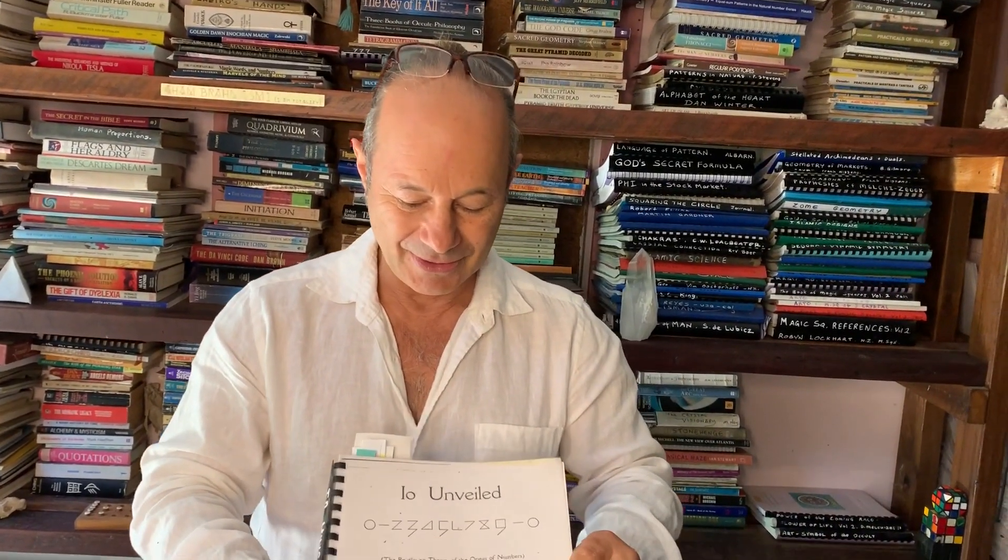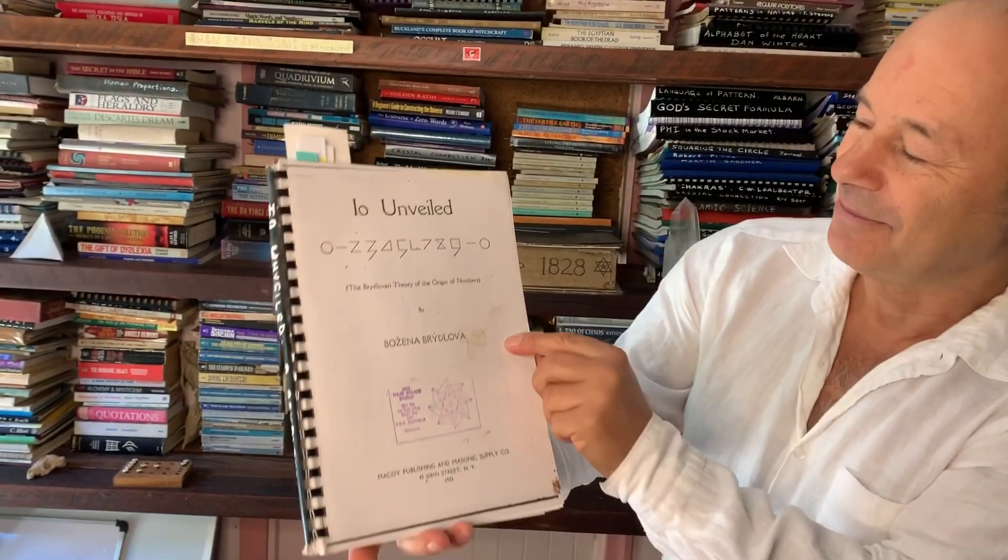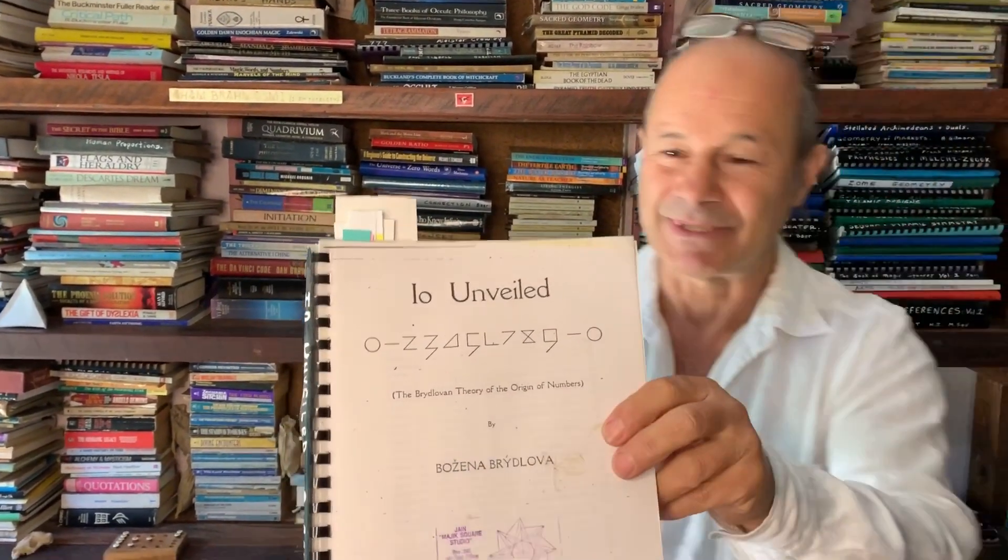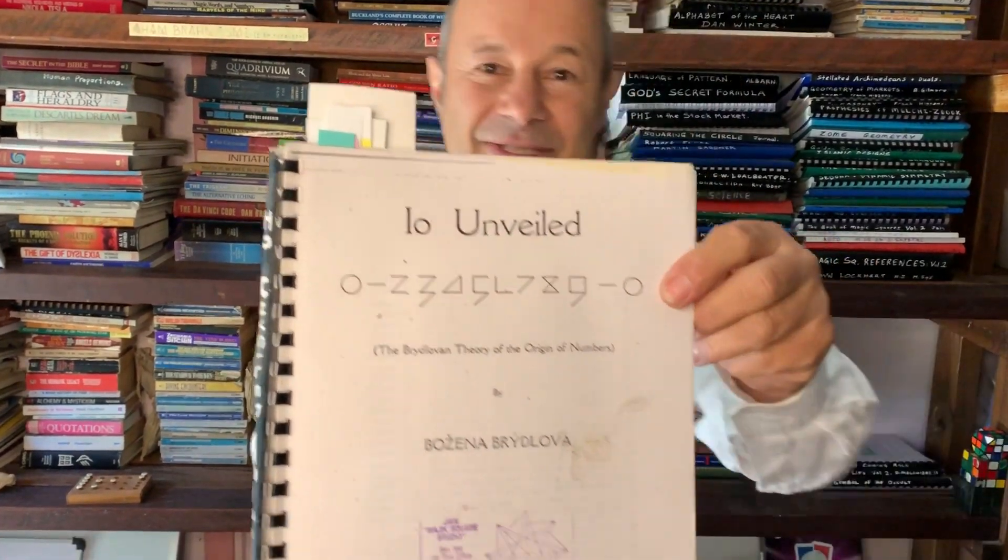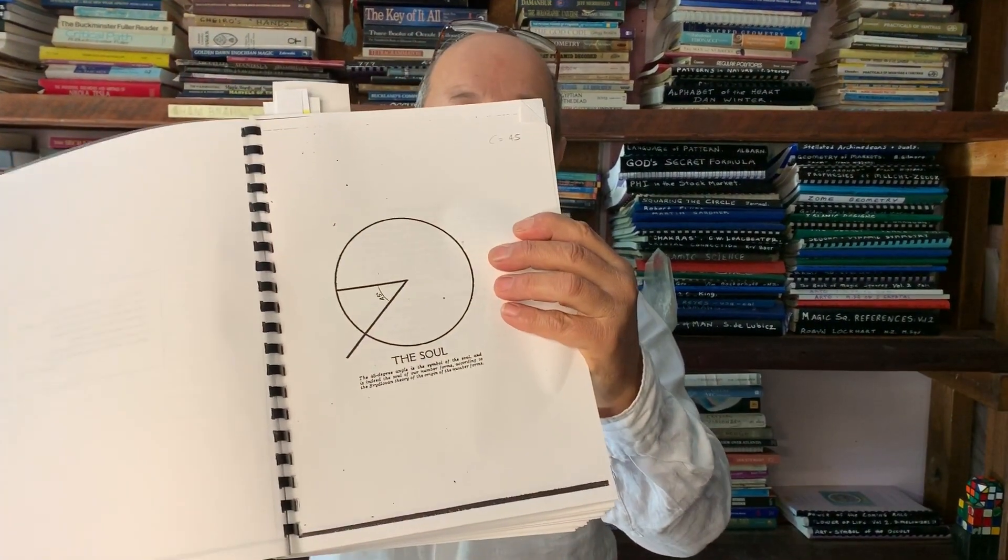Okay, on another subject, this is a curiosity, it's called Ayo Unveiled. And it's got an interesting name. The Bridlovian Theory of the Origin of Numbers. So just checking out the way those numbers are written with straight lines, this person believes that when we look at 45 degree angles, this is the map of the soul, the 45 degree angle has got to do with the soul. So this was the number one.